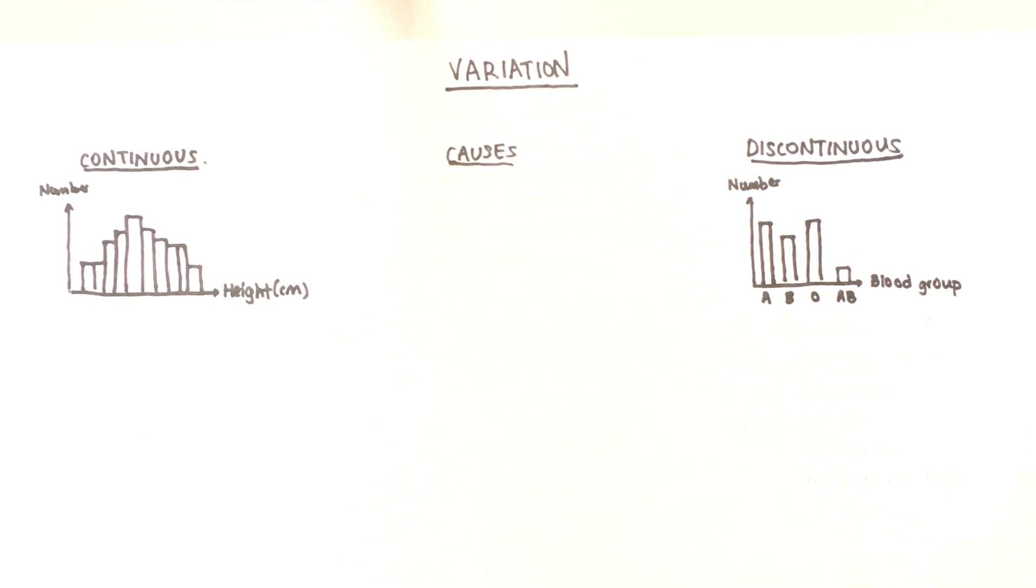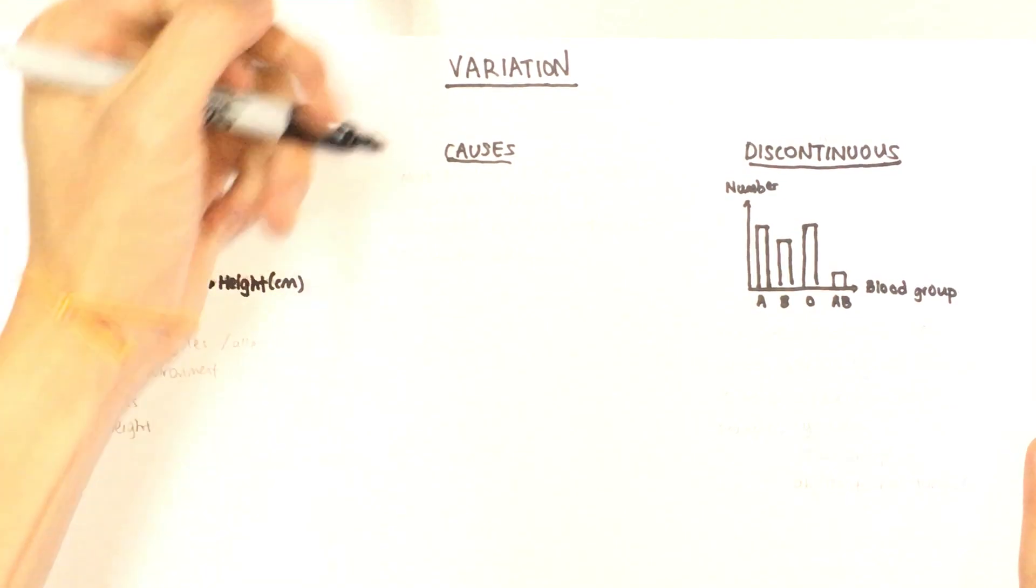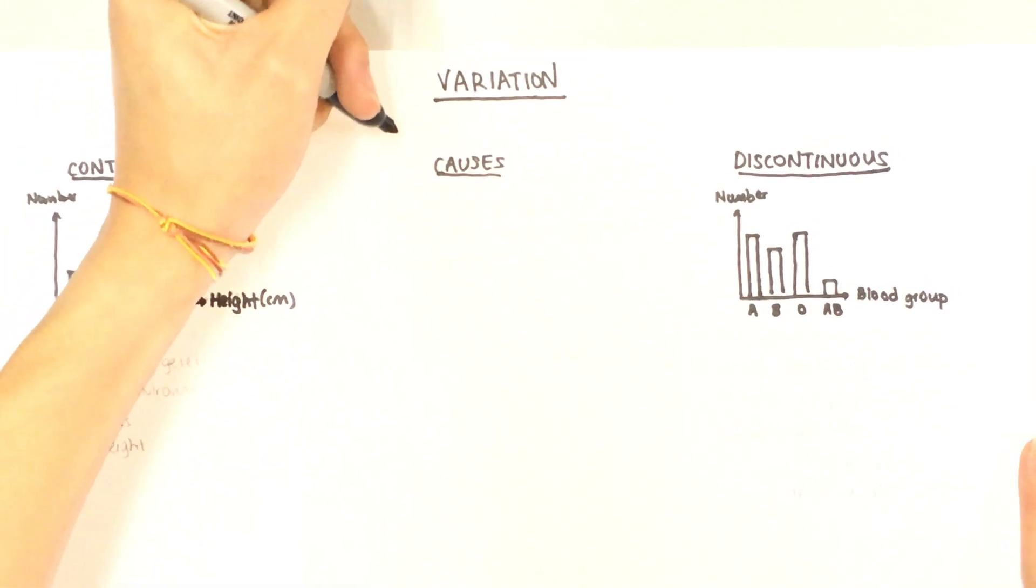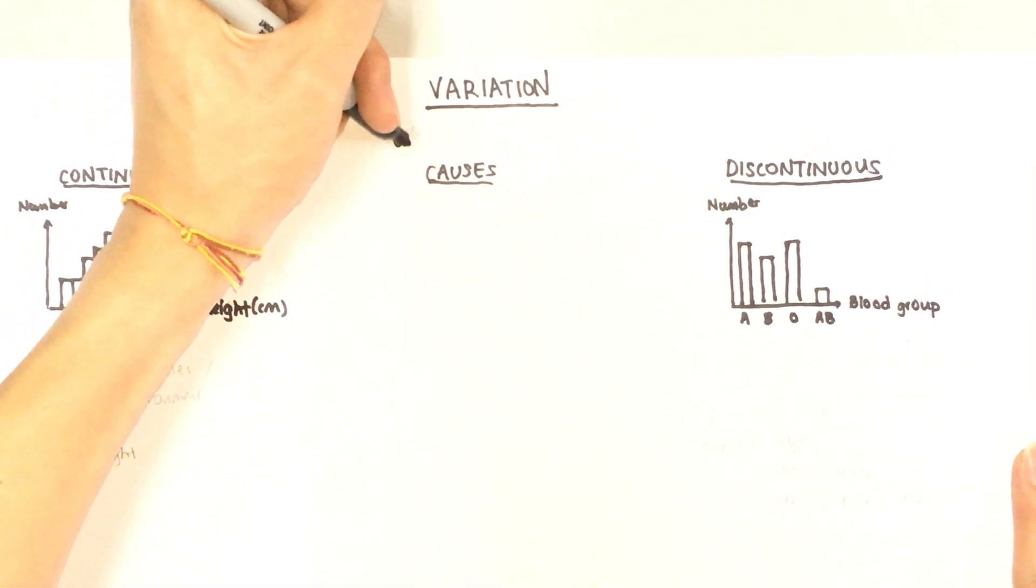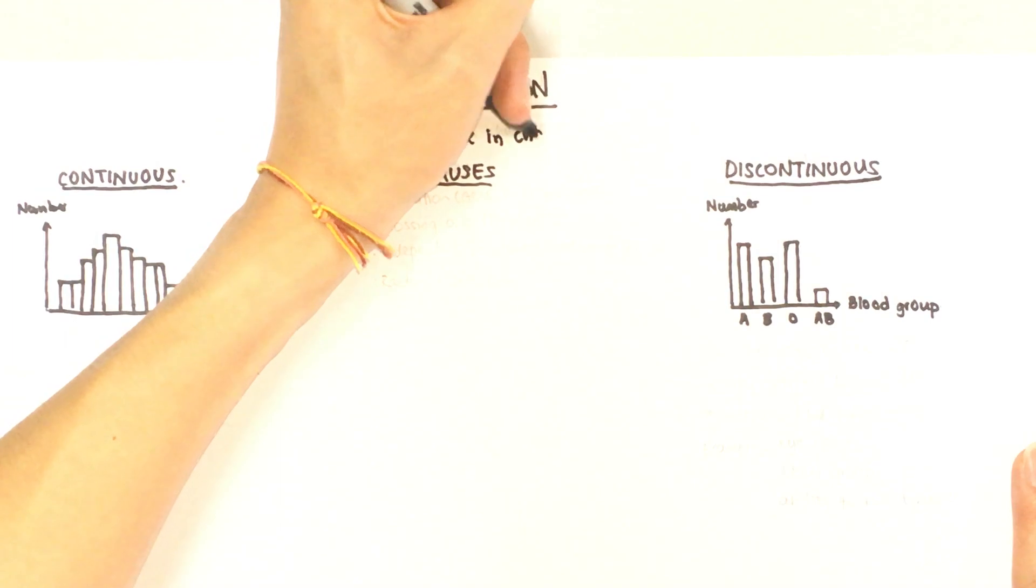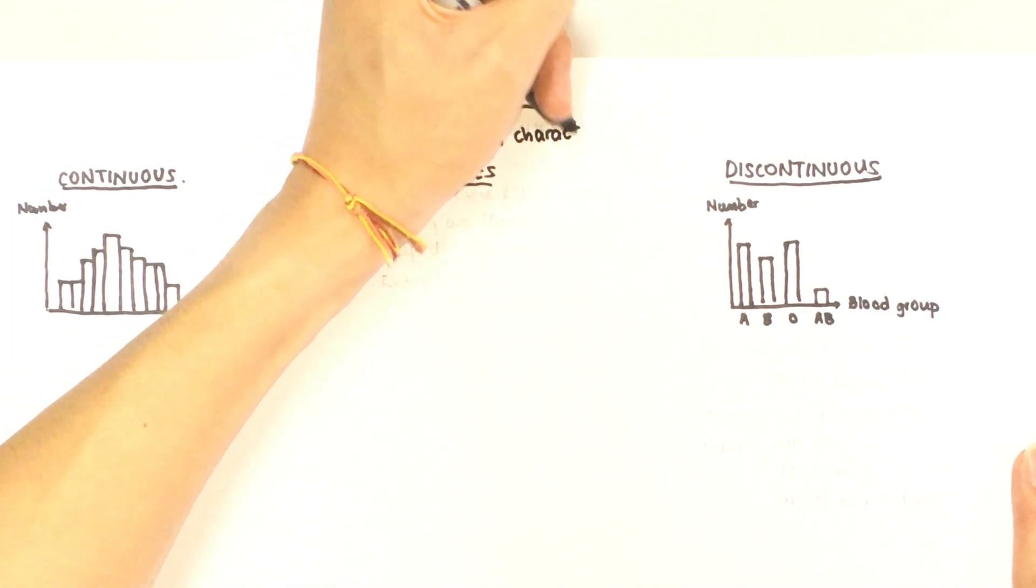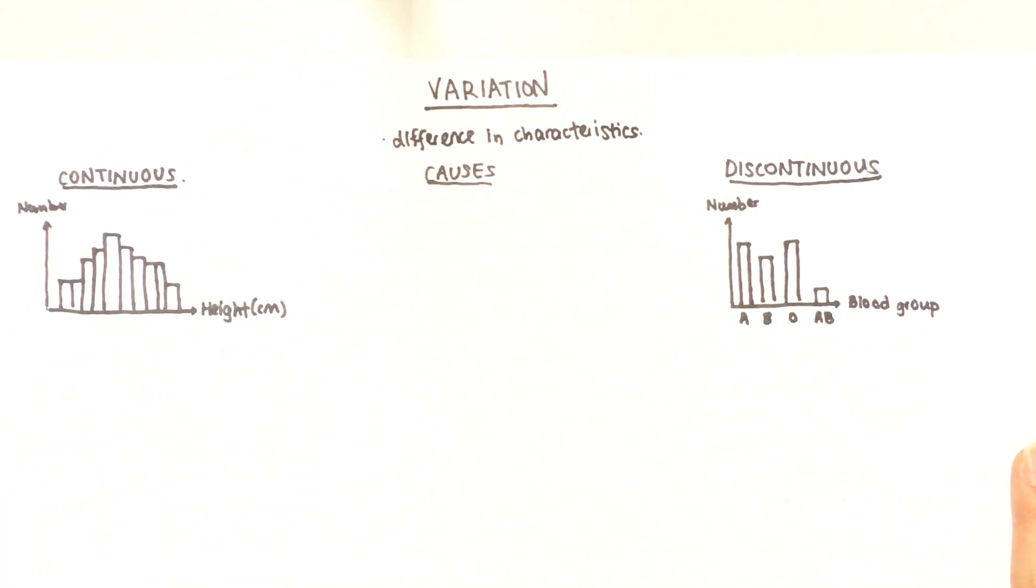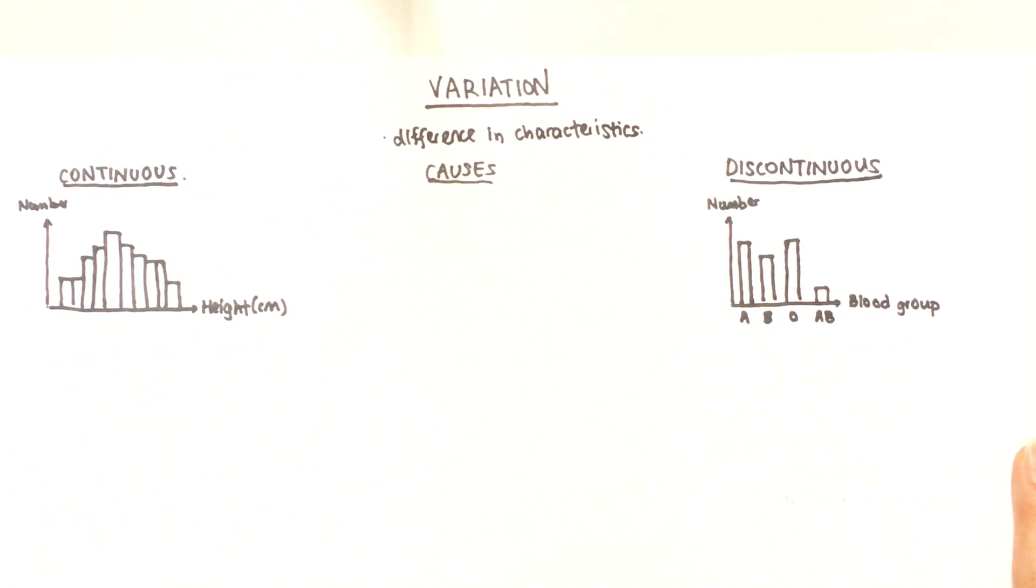So the simplest definition of variation is the difference in characteristics. Now these characteristics can be visible which is physical or they can not be visible which is, for example, in your genes. So you can have genetic variation as well.